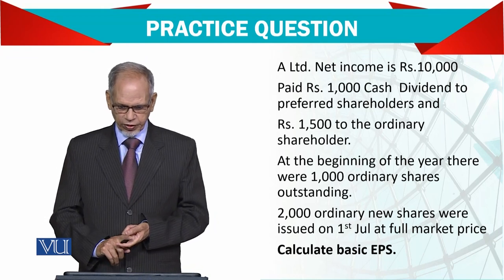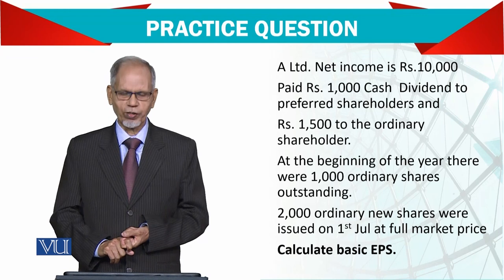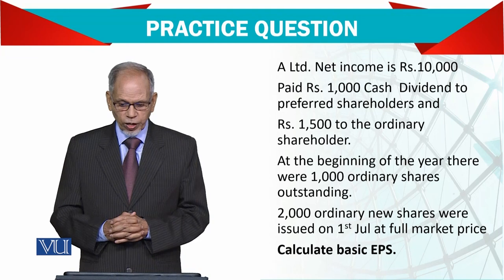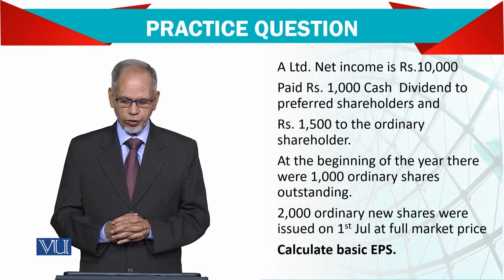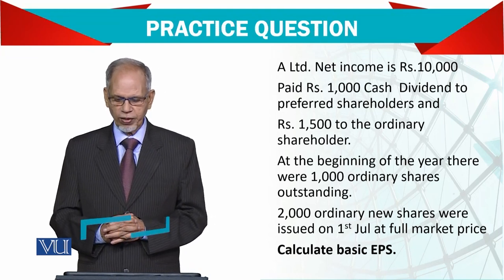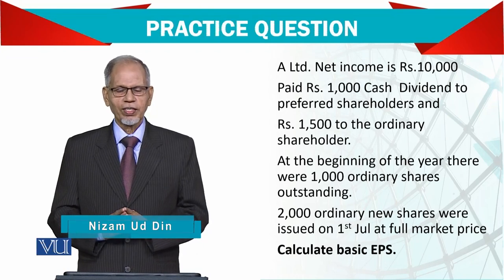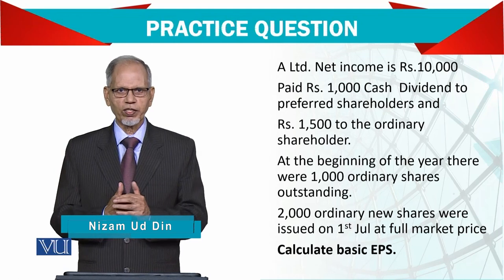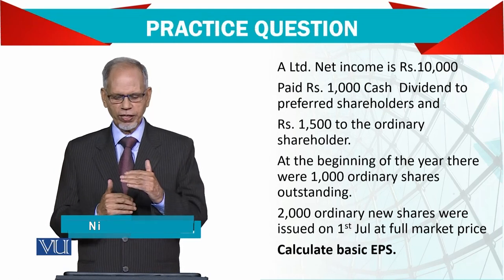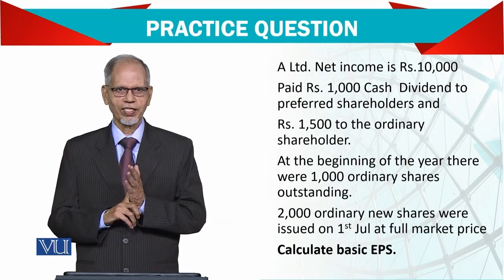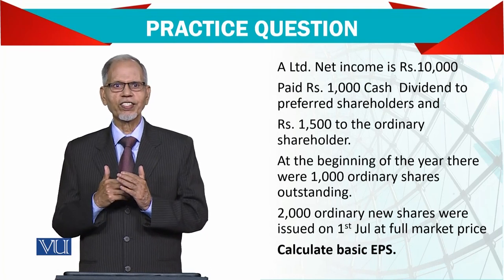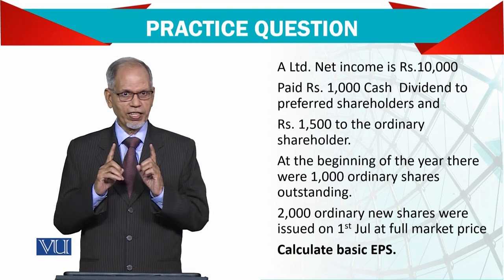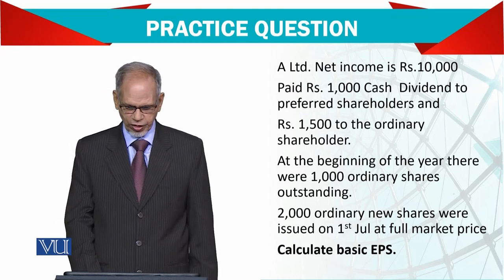At the beginning of the year there were 1,000 ordinary shares outstanding. 2,000 new shares will be issued on 1st July at full market price, so you have another 2,000 shares but that will start from 1st of July. The first 6 months you have 1,000 shares, but in the last 6 months you have 3,000 shares. We need to work out the weighted average — let's see how to do that.